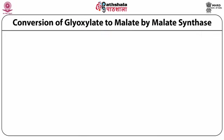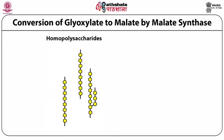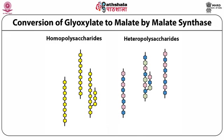Polysaccharides consisting of the same type of monosaccharides are called homopolysaccharides — homo means same kind. Polysaccharides consisting of more than one type of monosaccharides are called heteropolysaccharides — hetero means more than one kind. In the figure, the yellow color structure shows the monomeric unit of homopolysaccharides, while the different colored hexagonal structures show the different types of heteropolysaccharides.